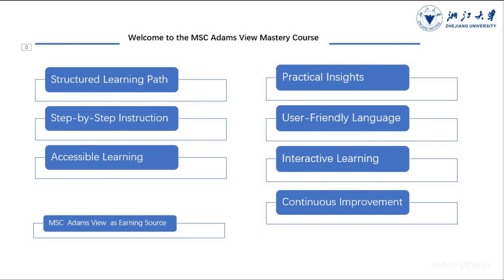This could include conducting in-person or online training sessions, developing course materials, or even creating your own educational resources. Product Development: As a skilled user of MSC Adams View, you may identify opportunities to develop and commercialize your own software tools, plugins, or applications that complement or enhance the functionality of the platform. By addressing specific needs or pain points within the user community, you can create value-added solutions and generate revenue through product sales or licensing agreements.